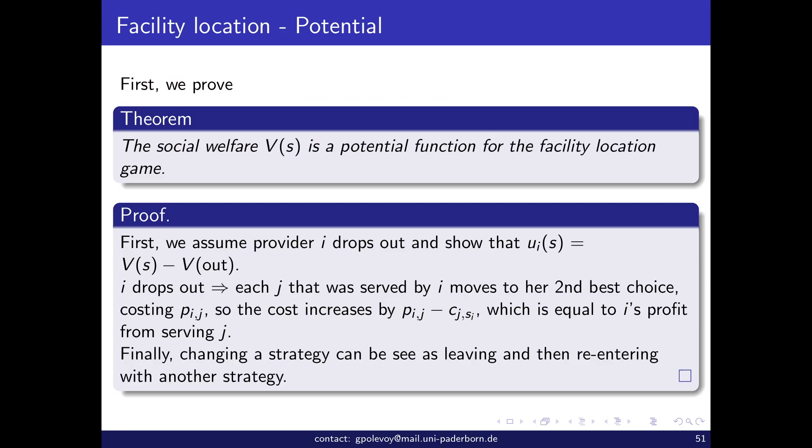First, let's prove that it's a potential game. The social welfare is a potential function in this case — it's very simple, you don't have to look far. The social welfare is a potential function for the facility location game. The social welfare is the sum over all couples where service provider i serves user j: the value the user derives, π_j, minus the cost of providing the service from that location.